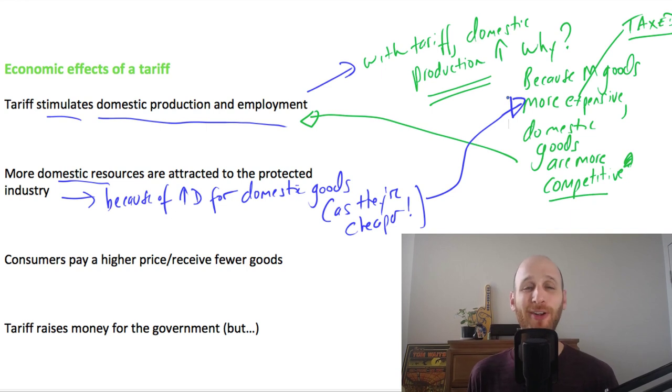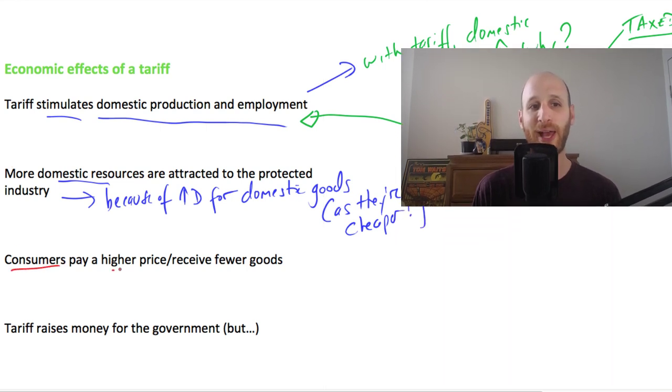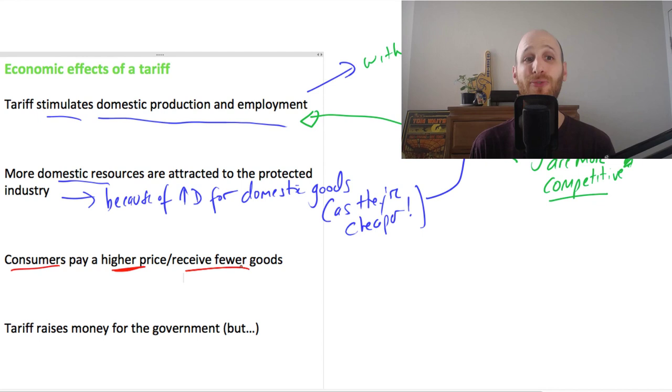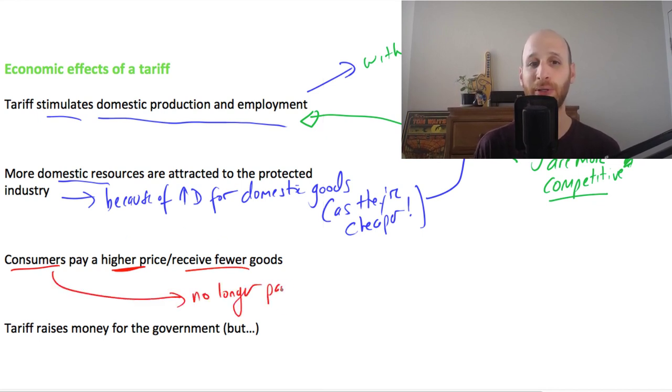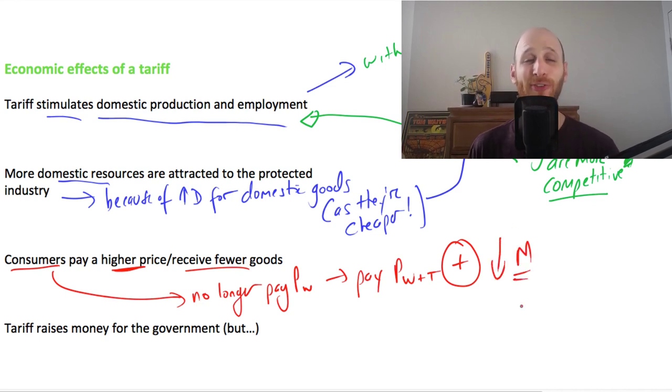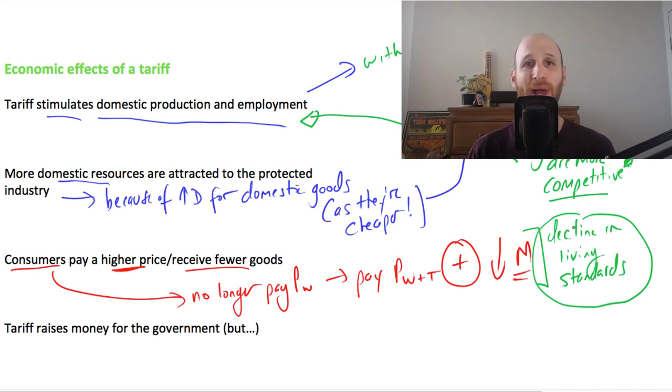The negative side here, an economic effect of the tariff, is also that consumers pay a higher price and they receive fewer goods. Consumers no longer pay that world price. In fact, they have to pay the world price plus the tariff because the domestic producers' price raises to that level. So they have to pay higher prices and there are less imported goods. So they get less of those selection of goods from domestic and overseas producers. In that way, we could actually see a decline in living standards because consumers have to pay higher prices and they get lower goods.